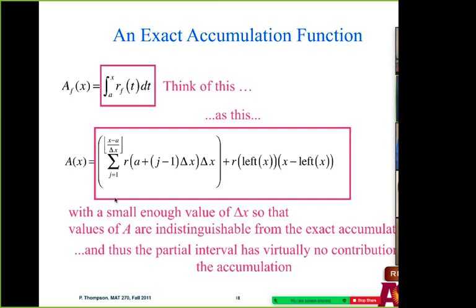It's small enough delta x so that the approximations no longer are different. That's really what we're saying. We make delta x small enough so that when you make it smaller, it doesn't change anymore — the approximations themselves are not different anymore because we're creating this exact accumulation function. So we make the delta x smaller and smaller until those approximations don't differ anymore, and then we call it exact.